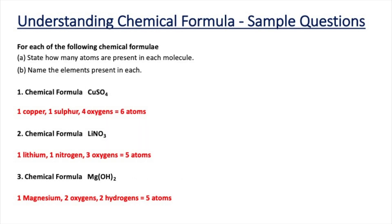Now let's look at some examples of chemical formulae and how we interpret them. In the first example we have CuSO4, and you'll notice there are three capital letters. The first is for copper, Cu — capital C — one element. Then there's a capital S for sulfur and a capital O for oxygen. There is one copper atom, one sulfur atom, and four oxygen atoms, giving a total of six atoms in that compound.